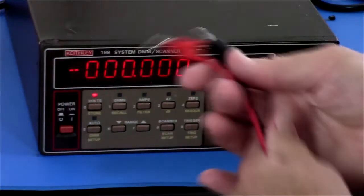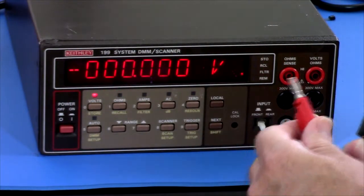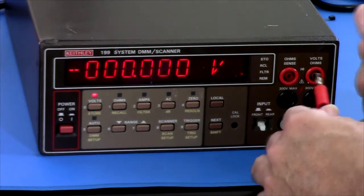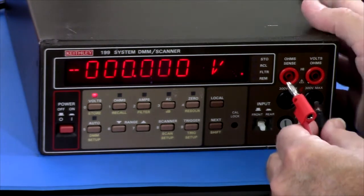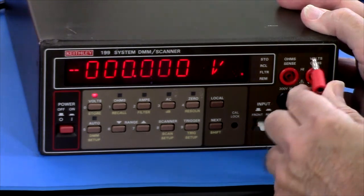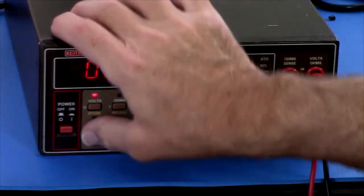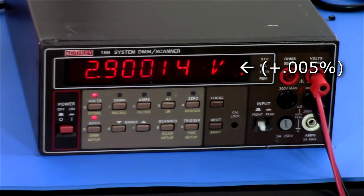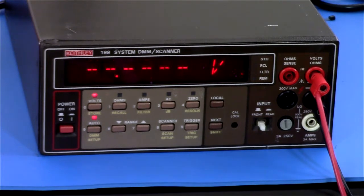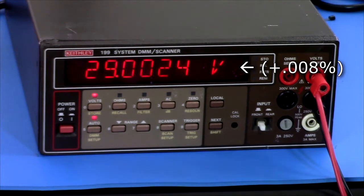So I've got some DC volts here. This is connected to the Fluke 343A, which is currently set for 2.9 volts. Precisely, exactly. That's pretty good. Try 29. Yeah. Okay. 290.